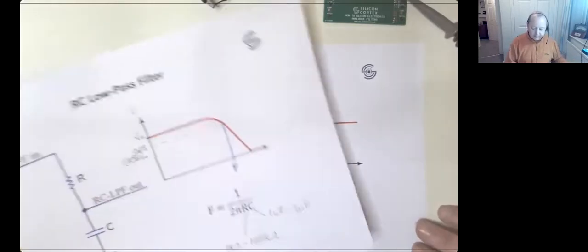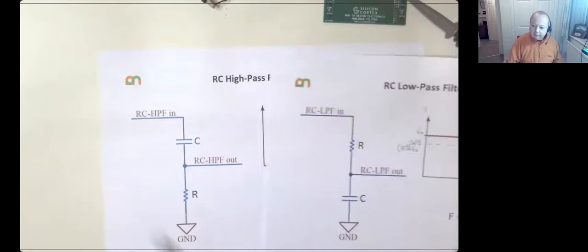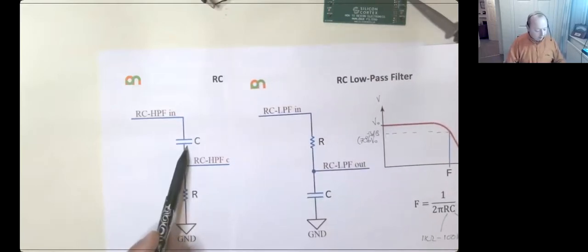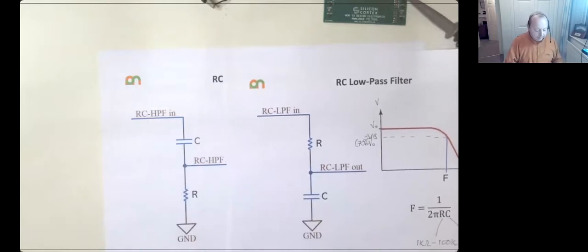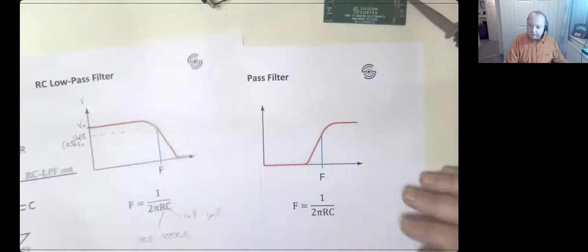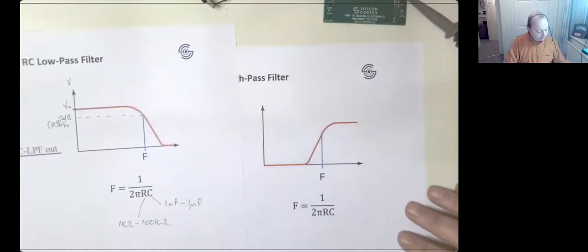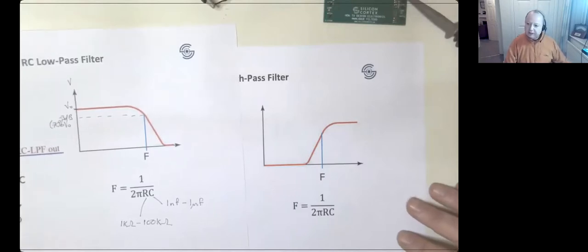The high-pass filter, its brother or sister, is just we've swapped the resistor and the capacitor around and it just works the other way. And would you believe it - the equation is exactly the same. It's not a mistake; it doesn't change. So it's dead easy to swap between the two.